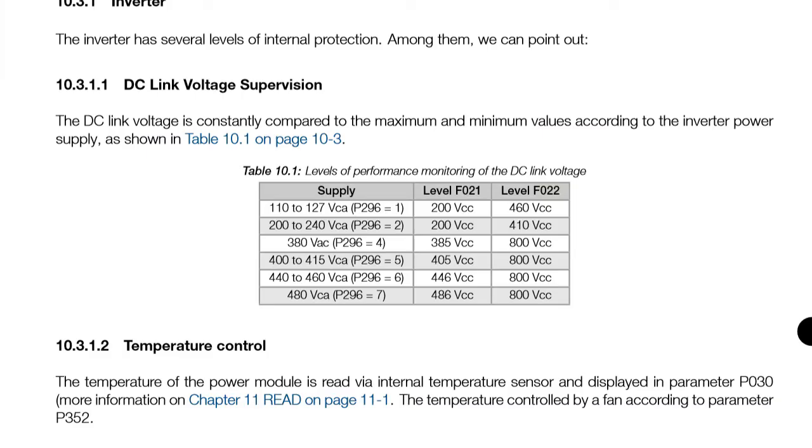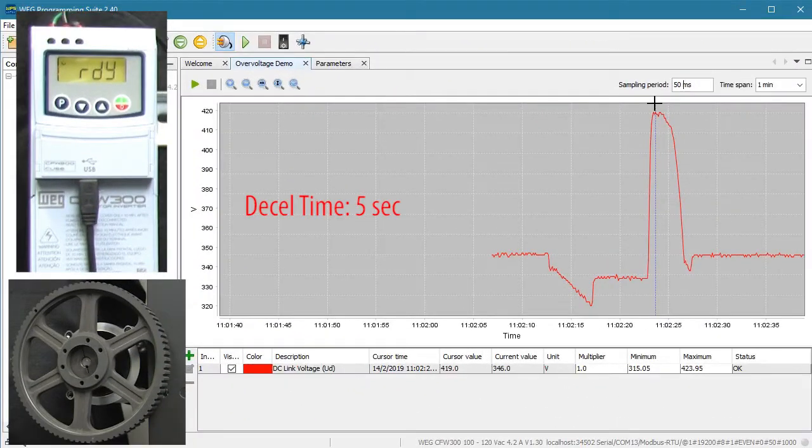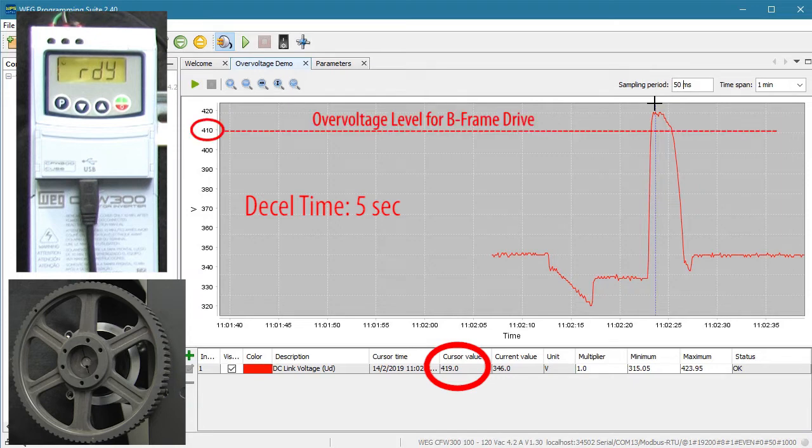But look at this. On the 230 volt B-frame drive, the overvoltage threshold is only 410 volts. That would be down here on the trend. In the previous video, we saw that a deceleration ramp of 5 seconds took the DC bus to 420 volts. So to avoid an overvoltage fault on this B-frame drive, we would have to slow down the deceleration ramp to something even longer than 5 seconds to keep the DC bus below 410 volts, right?